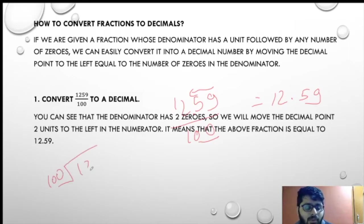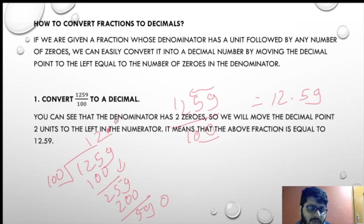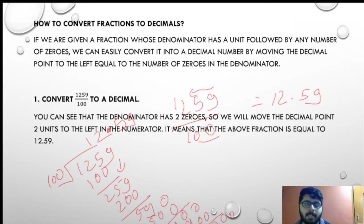The long-cut method is also possible — that is 1259 divided by 100. Working through: 1s are 125, 9 comes down, 2s are 259, place the point, and after the point a 0 comes. This is a long procedure compared to the shortcut method.